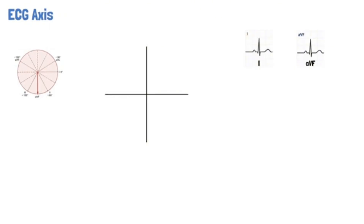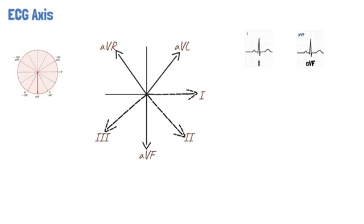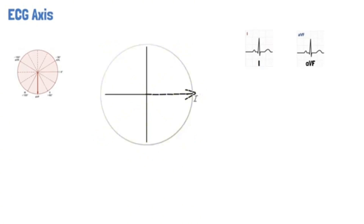If we return to the ECG hexaxial system, we can see how these leads can be used to look at the relationship between the QRS axis and these two leads. Lead 1 cuts the ECG system in horizontal halves at 0 degrees, and lead AVF cuts the ECG system into vertical halves at 90 degrees. Therefore, these two leads can be used to divide the ECG system into 4 quadrants.